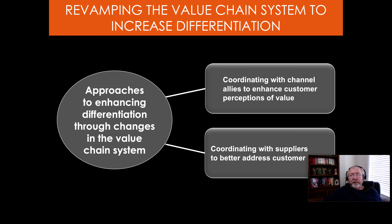When you revamp the value chain to increase differentiation, you look for approaches that enhance differentiation through changes in the value system. You can coordinate with channel allies to enhance customer perceptions of value, and coordinate with suppliers to better address customer needs. For example, recalling the Takata airbag failures in several cars — if you had supplier quality problems there, you would work with a different, better airbag manufacturer instead.